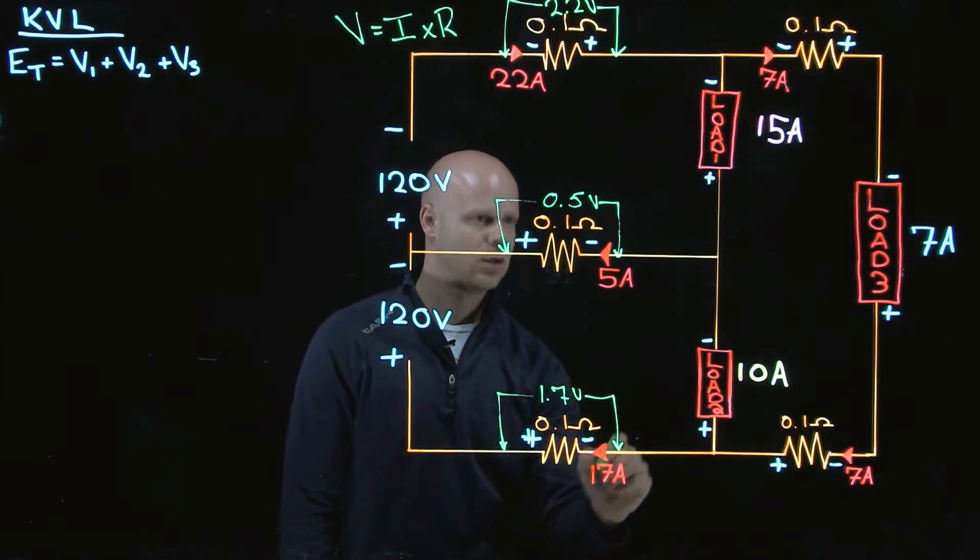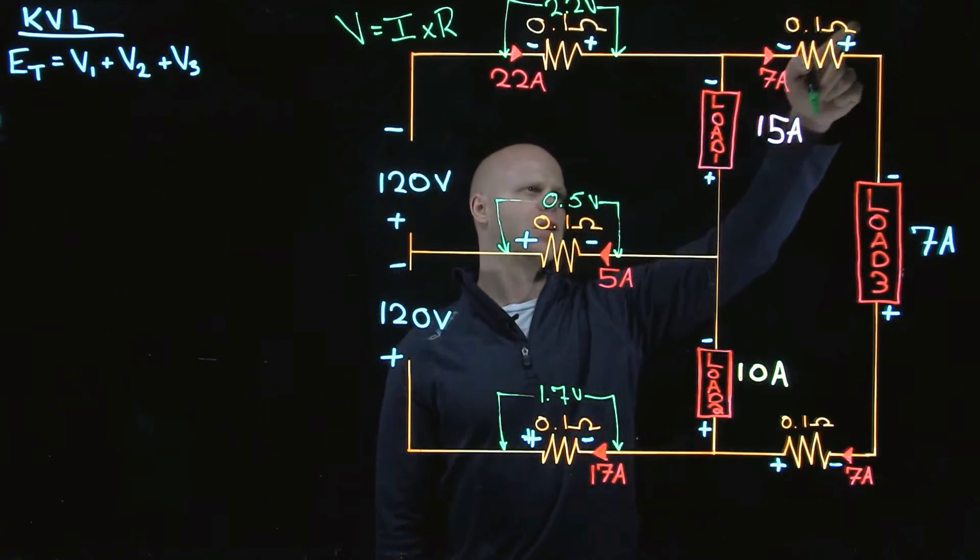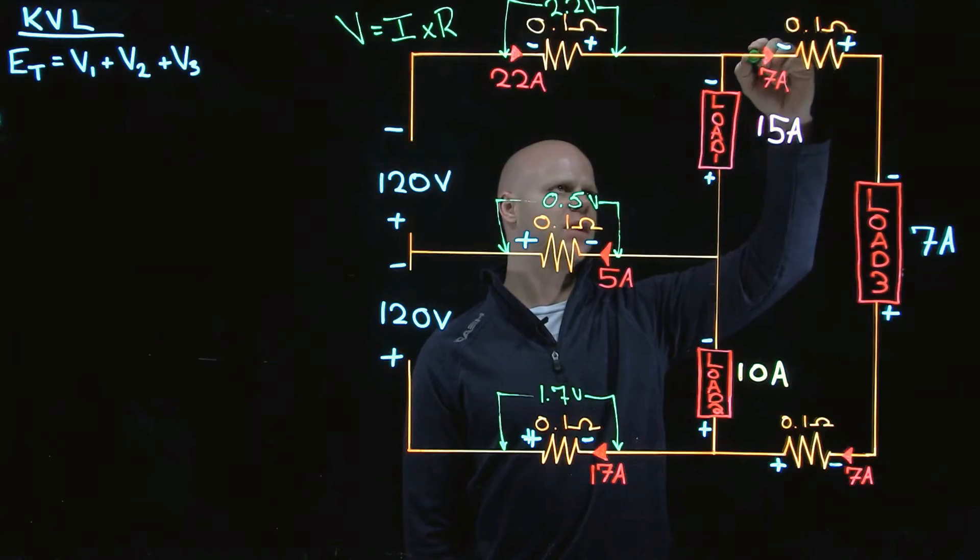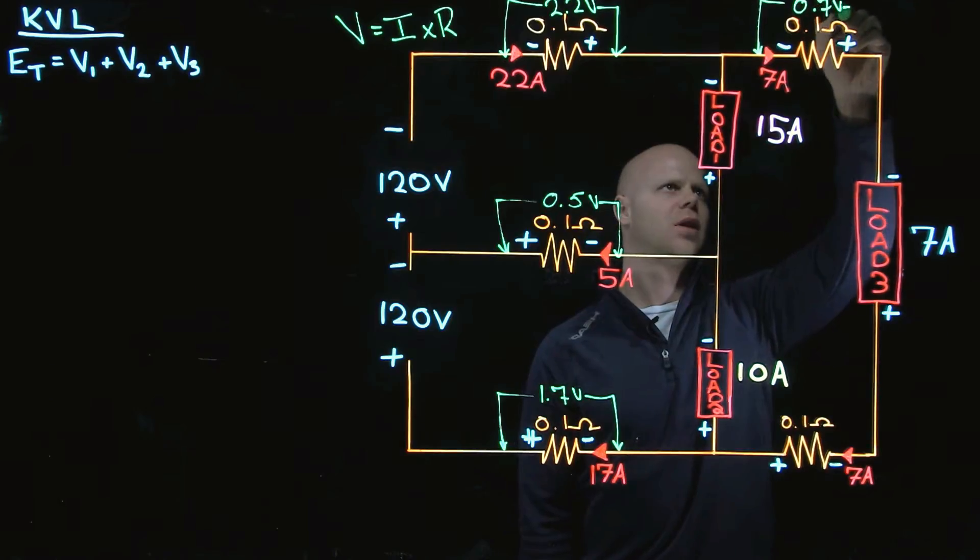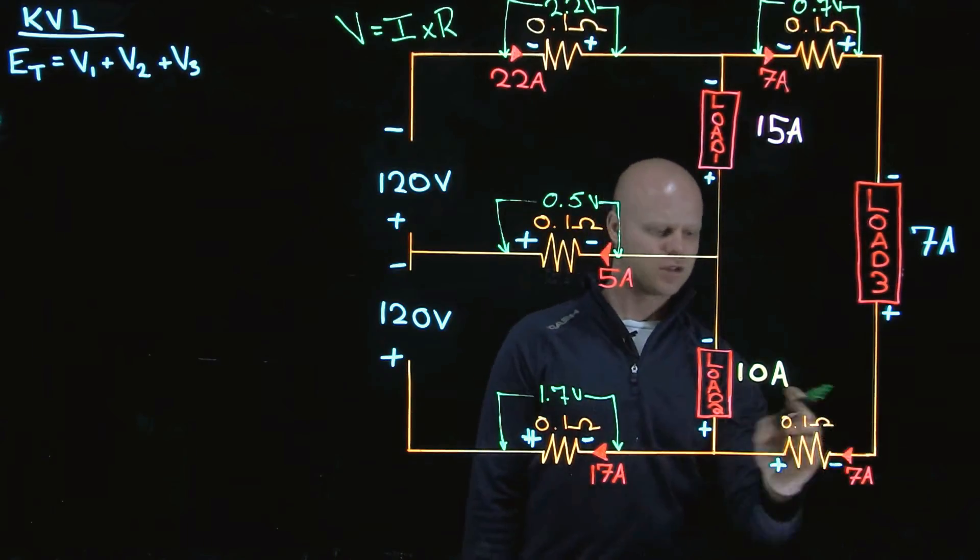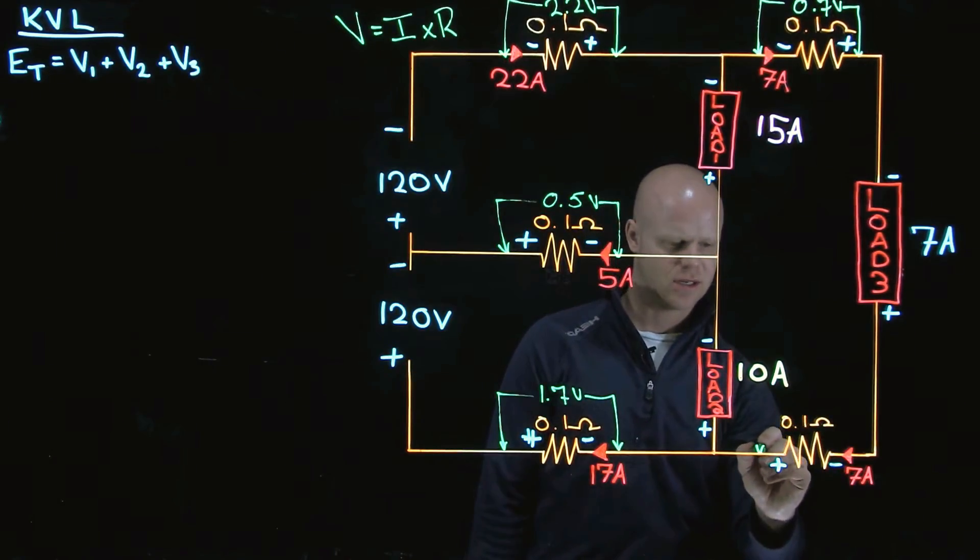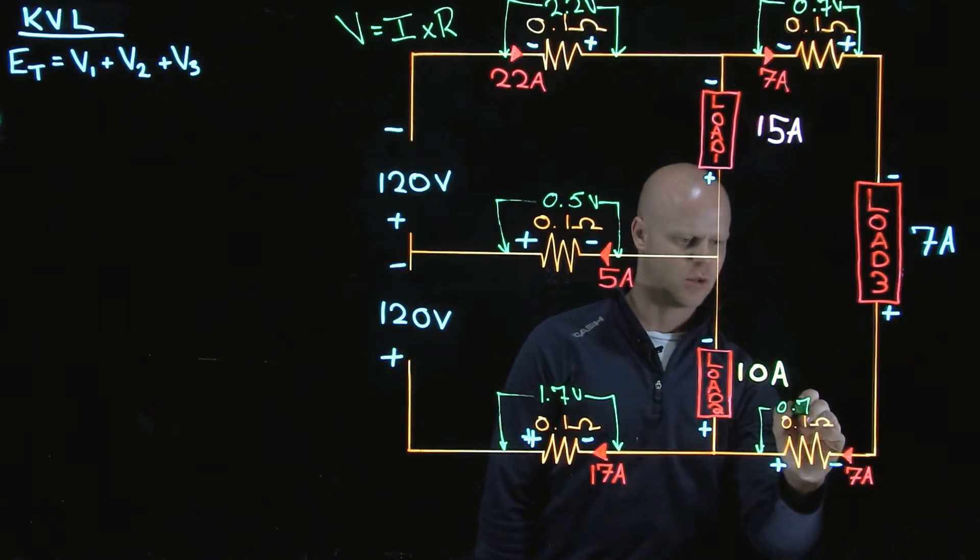Across this conductor here, the volt drop here would be 0.7 volts, and the volt drop across this conductor here would be 0.7 volts.